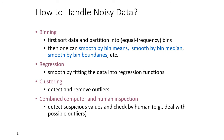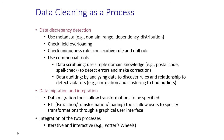The last approach is combined computer and human inspection — detecting suspicious values automatically and then having humans check for possible outliers. As a process, data cleaning begins with data discrepancy detection using metadata, checking field overloading, and applying uniqueness rules, consecutive rules, and null rules. Commercial tools like data scrubbing and data auditing are also available to detect data discrepancies.